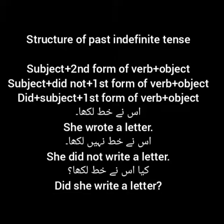Now let's see the structure of past indefinite tense. Affirmative: Subject + second form of verb + object. Negative: Subject + did not + first form of verb + object. Interrogative: Did + subject + first form of verb + object.